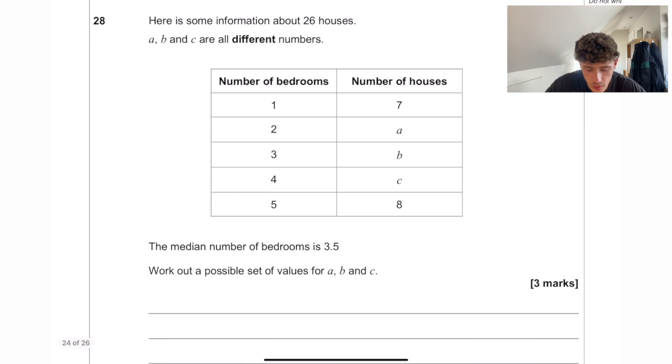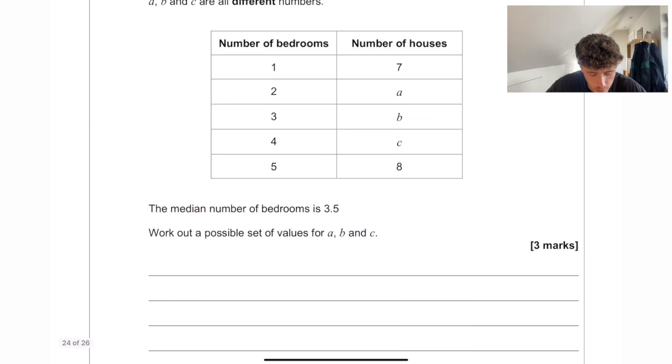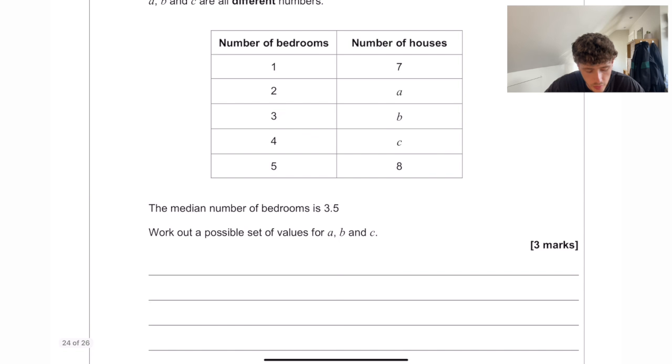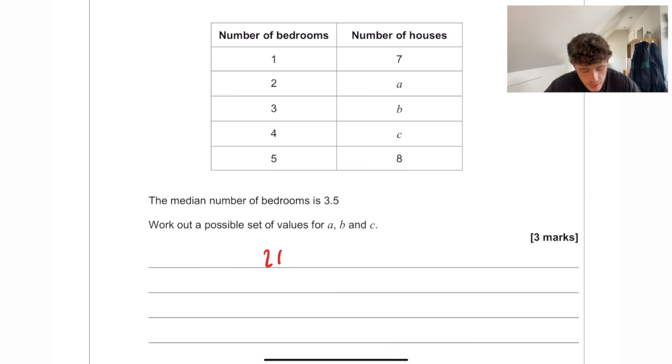Here is some information about 26 houses. A, B, C are all different numbers. The median number of bedrooms is 3.5. Work out a possible set of values for A, B and C. So we know there are 26 houses in total. So 7 plus 8 plus A plus B plus C must equal 26.